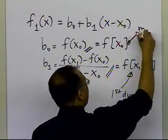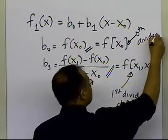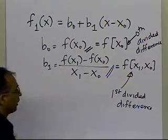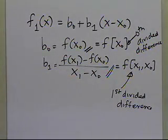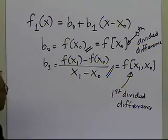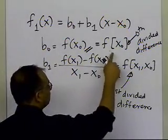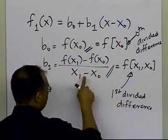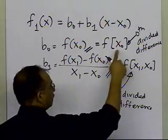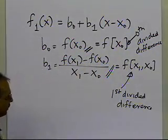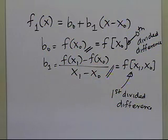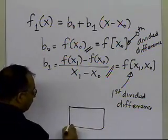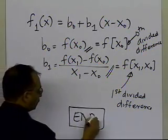This will be called the 0th divided difference. This may not make complete sense right now, but once we talk about second order and general order interpolation, you'll see the significance of rewriting the coefficients in this form. This is the definition of the first and 0th divided differences — just a rewriting of b0 and b1. In the next segment, we'll take an example. This is the end of this segment.